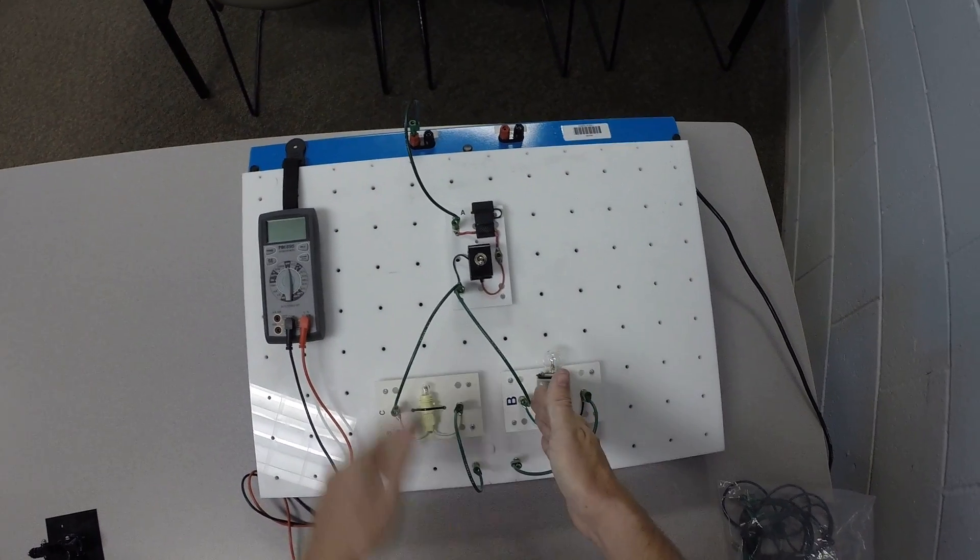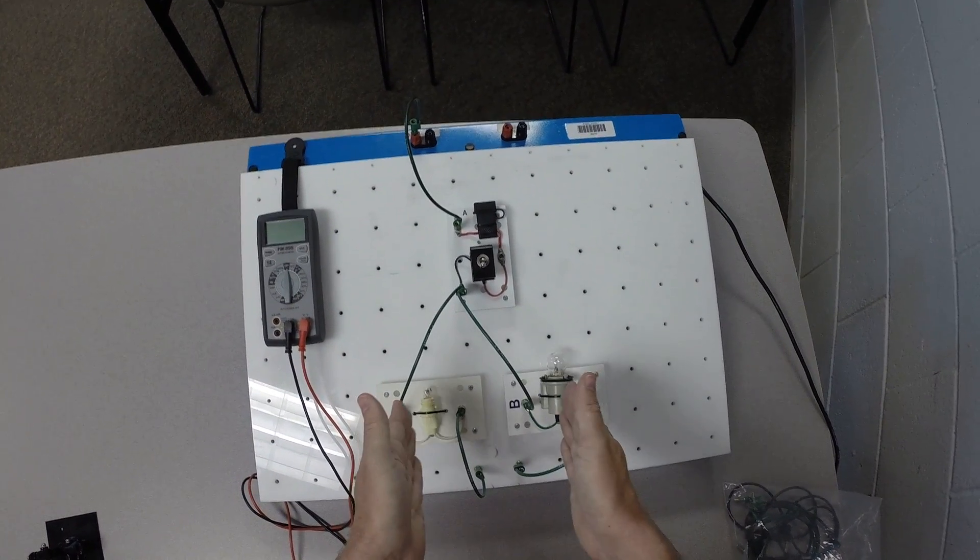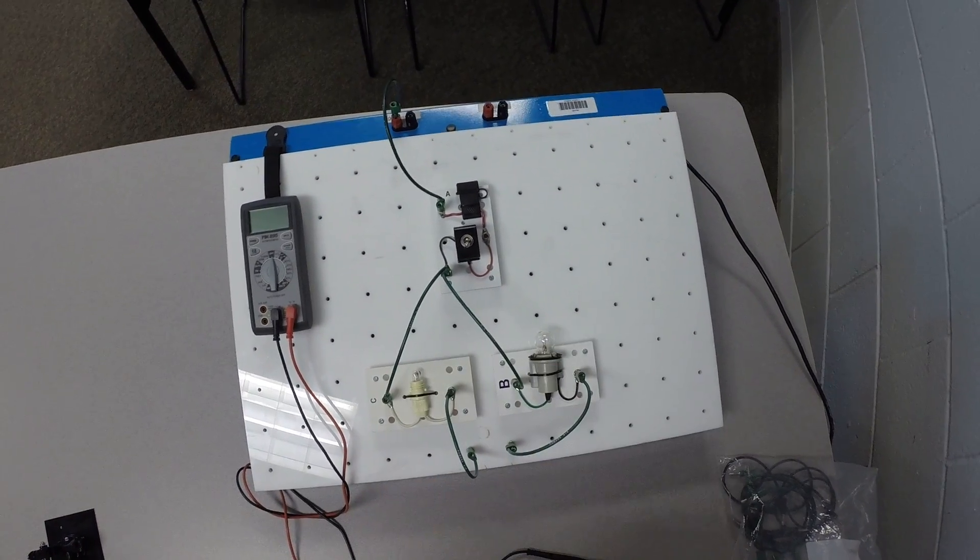So this part of the circuit and this part of the circuit are the two parallel branches, or two parallel legs, of this parallel circuit.